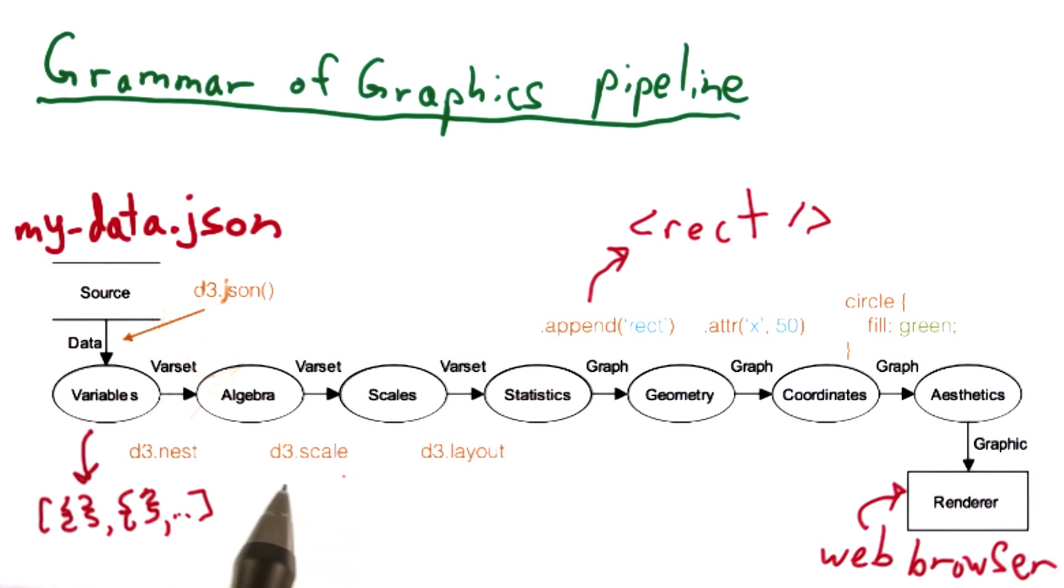The D3 layout function is a convenience function that allows us to apply a common transformation according to a set of predefined chart layouts we might want, such as a pie chart, a histogram, or a graph.